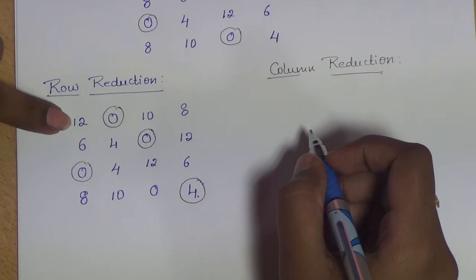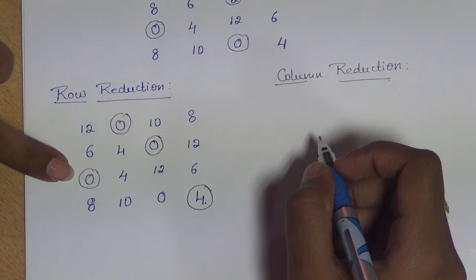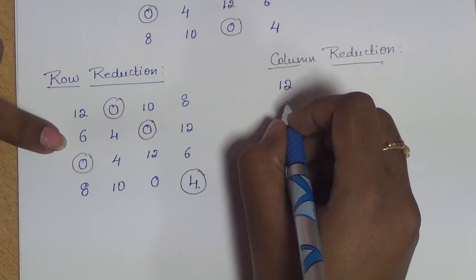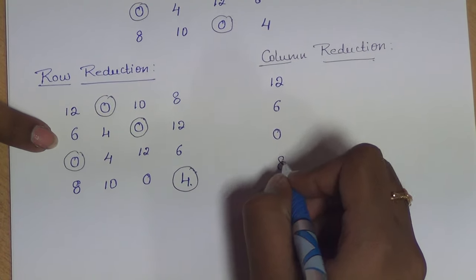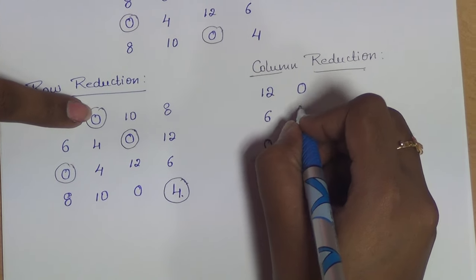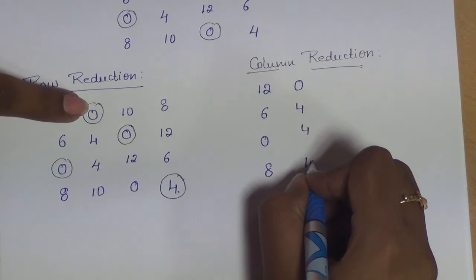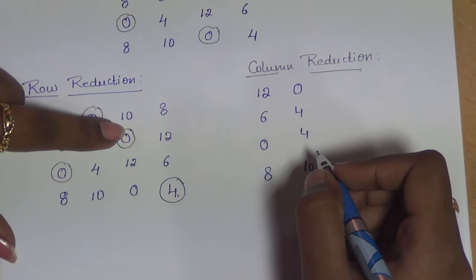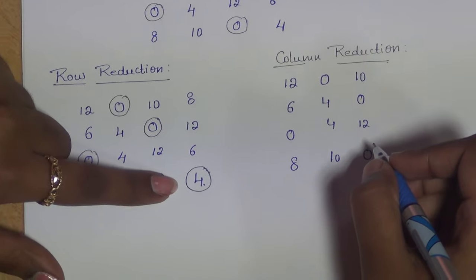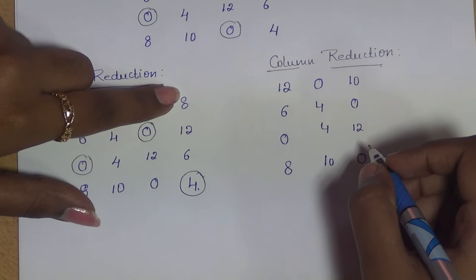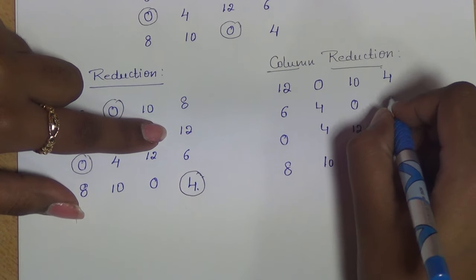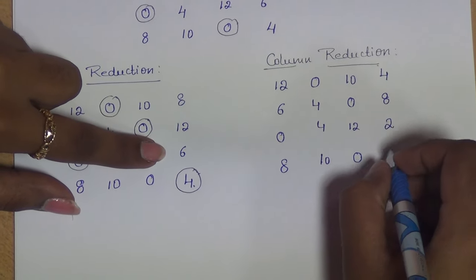To do the column reduction, we subtract each value in the first column with 0, so 12, 6, 0, and 8 remain the same. In the second column, subtract each value with 0: values are 0, 4, 4, 10. In the third column, subtract each value with 0: 10, 0, 12, 0. In the fourth column, the smallest value is 4, so subtract each value: 8 minus 4 is 4, 12 minus 4 is 8, 6 minus 4 is 2, 4 minus 4 is 0.